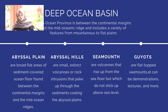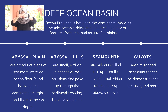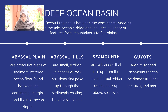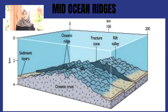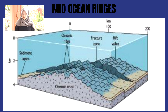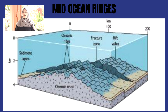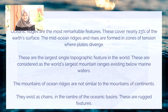And the last is guyot. Guyots are flat-topped sea mounts. Okay, for the next slide, we can explain about the mid-ocean ridge. We can see the big picture about some parts of the mid-ocean ridge and the aerial extension of the mid-ocean ridge.